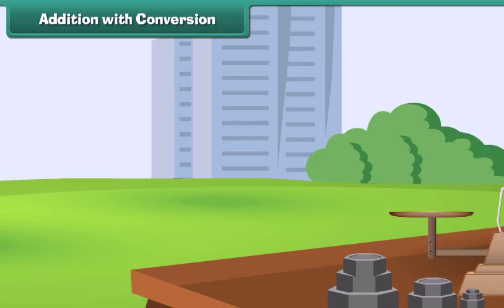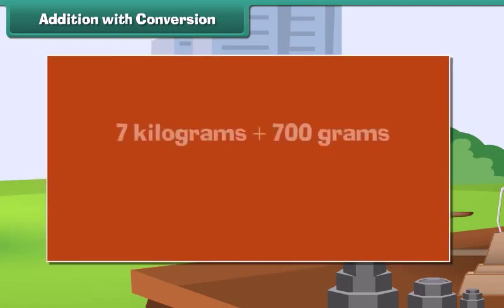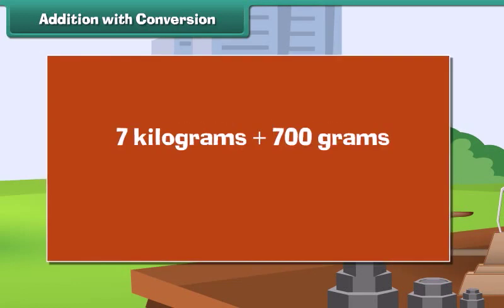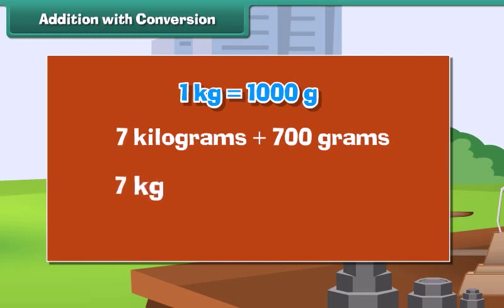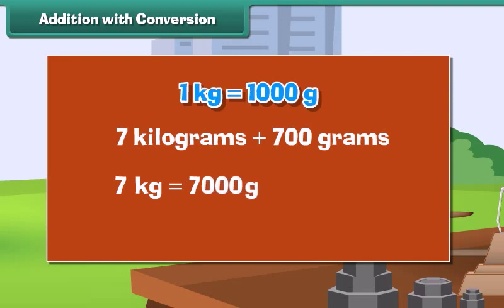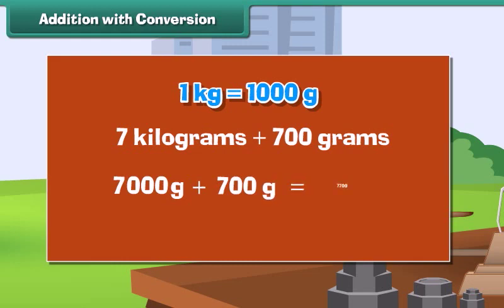Addition with conversion: Let us now add 7 kilograms with 700 grams. First, convert kilograms into grams: 1 kg is equal to 1000 grams, so 7 kg is equal to 7 into 1000 grams, which equals 7000 grams. Therefore, 7 kg plus 700 grams equals 7000 grams plus 700 grams, which equals 7700 grams.